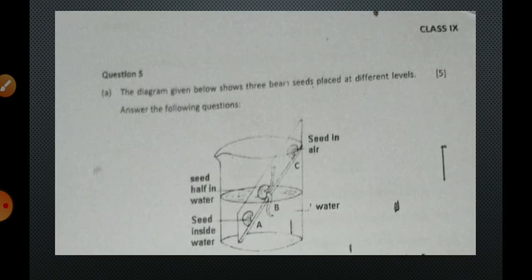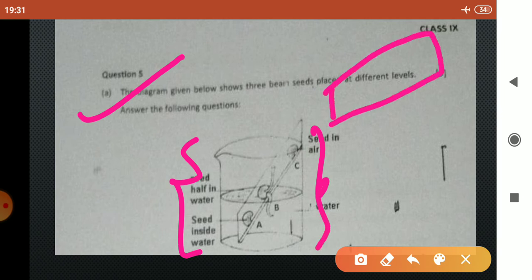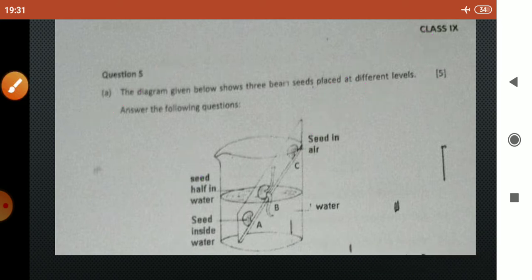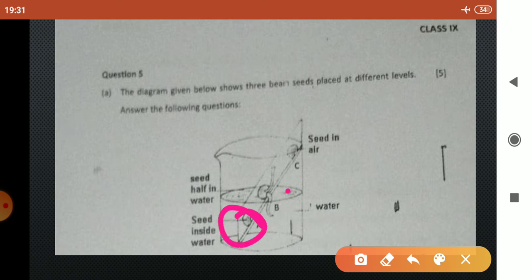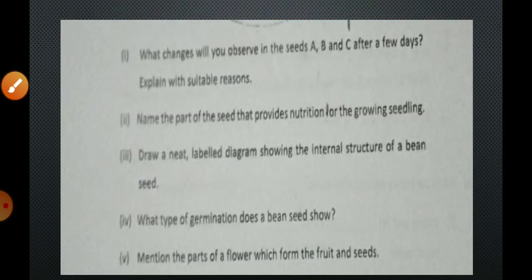Now let us move on to the fifth question. The diagram given below shows three bean seeds placed at different levels. This is a beaker which is half filled with water. We will take a slide and at three positions we will fix the three seeds. One seed is completely dipped in water, another one is present in between receiving both water and air properly, and the third one is present in the air.